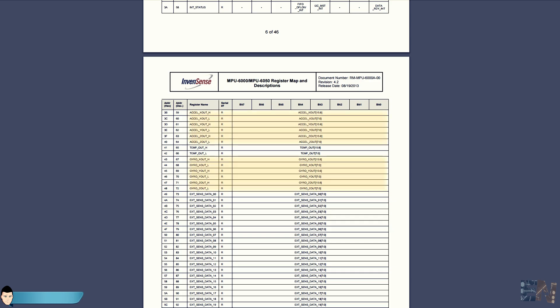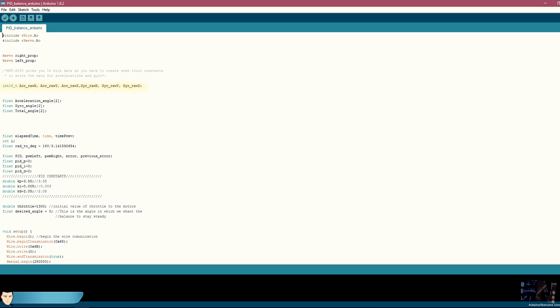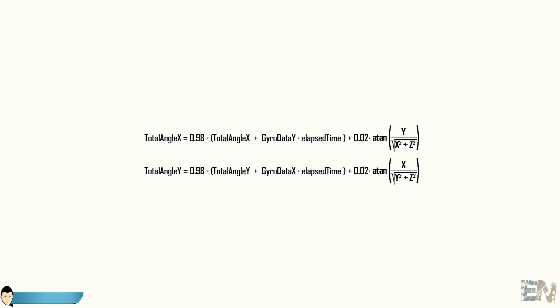One for each of the x, y and z axes. We will store those values in these constants. In order to obtain a good real angle we will have to add a filter between the angle obtained with the gyro values and the one obtained with the accelerations.